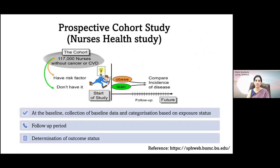Here are a few examples of prospective cohort studies. A classical example is the Nurses' Health Study, where 117,000 nurses were followed up. Initially they were divided on the basis of the risk factor, which was obesity — obese versus lean — and then followed for outcome development. The outcome compared was cancer or cardiovascular disease. At baseline, there was collection of baseline data, followed by a follow-up period, and then determination of outcome status.